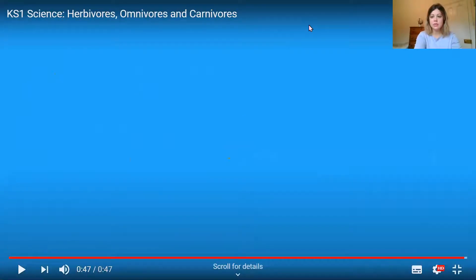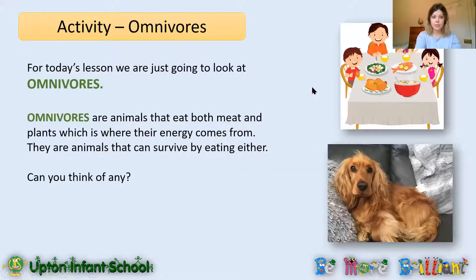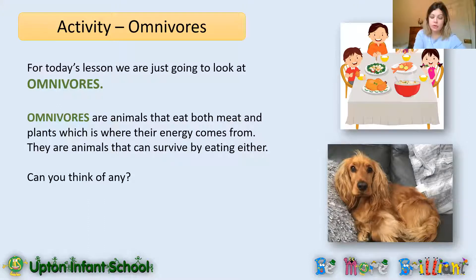Okay, so just a short little recap there, touching on herbivores, carnivores and omnivores — that's what we're going to look at today. Omnivores are animals that eat both meat and plants, which is where they get their energy from. They can eat either, and that's how they survive.